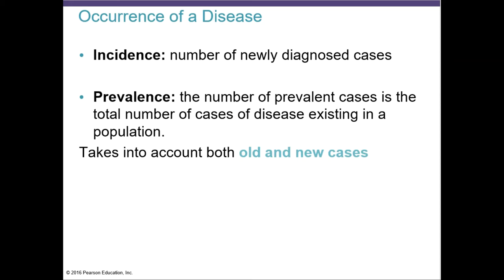The occurrence of a disease can be divided into five or six different topics. Incidence is the number of newly diagnosed cases. Prevalence includes the old and the new cases — you count whatever was already in the population plus the new cases.